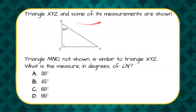Triangle XYZ and some of its measurements are shown. Triangle MNO, not shown, is similar to triangle XYZ. What is the measure in degrees of angle N?